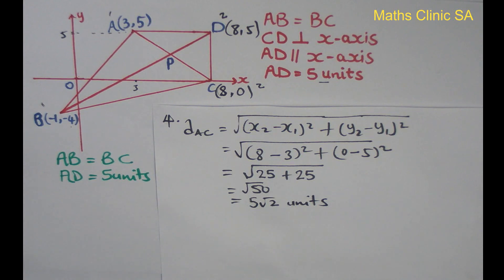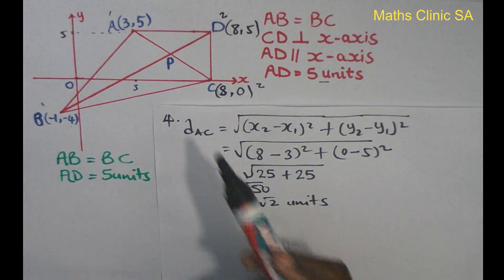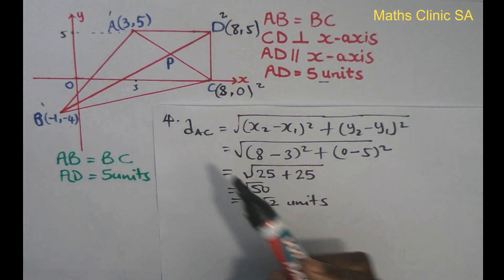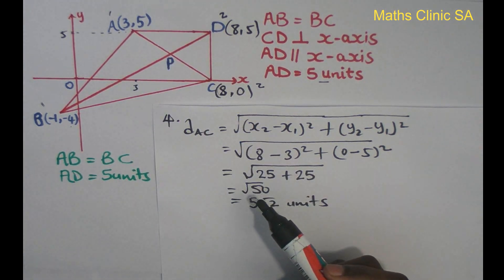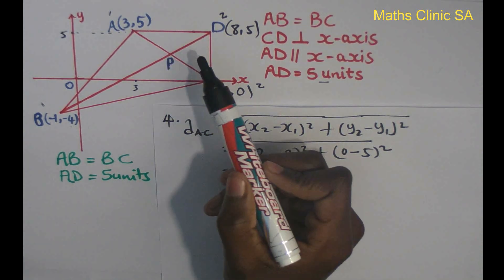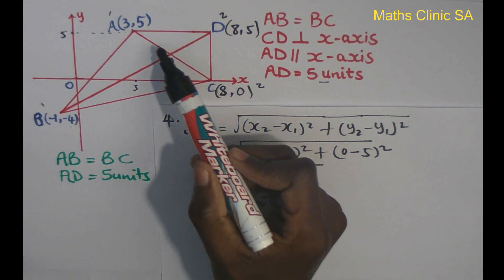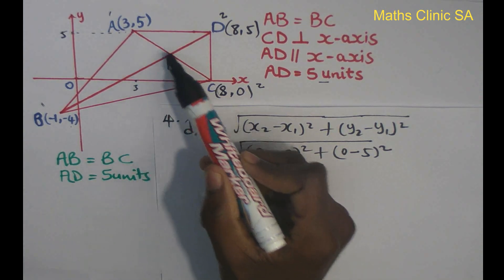Now the question is to find the area of the quadrilateral ADCB. The area of the quadrilateral ADCB is divided into triangles.